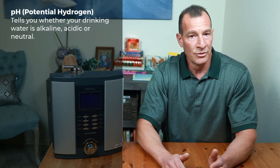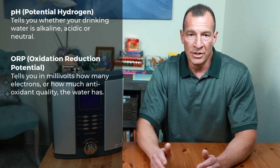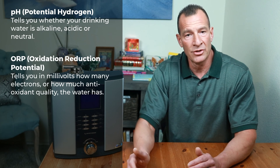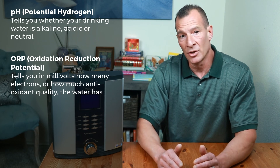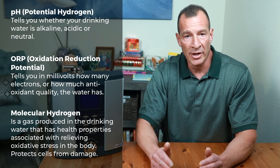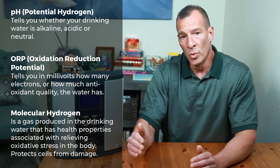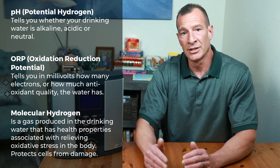To summarize all three of these terms: pH stands for potential hydrogen and tells you whether your water is either alkaline, acidic, or neutral. ORP stands for oxidation reduction potential and tells you in millivolts how many electrons or how much antioxidant quality your water has. And molecular hydrogen is a gas produced in the drinking water that has health properties associated with relieving oxidative stress in the body, meaning that it helps the body by protecting cells from damage. Those are the three big reasons you would even want to own a water ionizer in the first place.